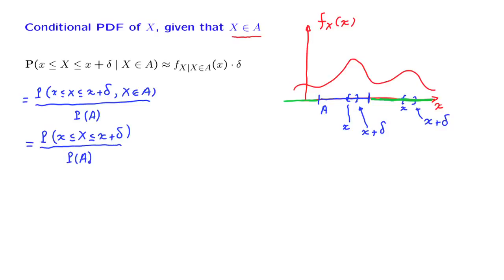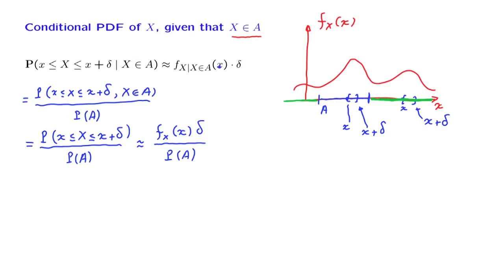The numerator is just an ordinary probability that the random variable takes values inside a small interval. By our interpretation of PDFs, this is approximately equal to the PDF evaluated somewhere in that small interval times delta.